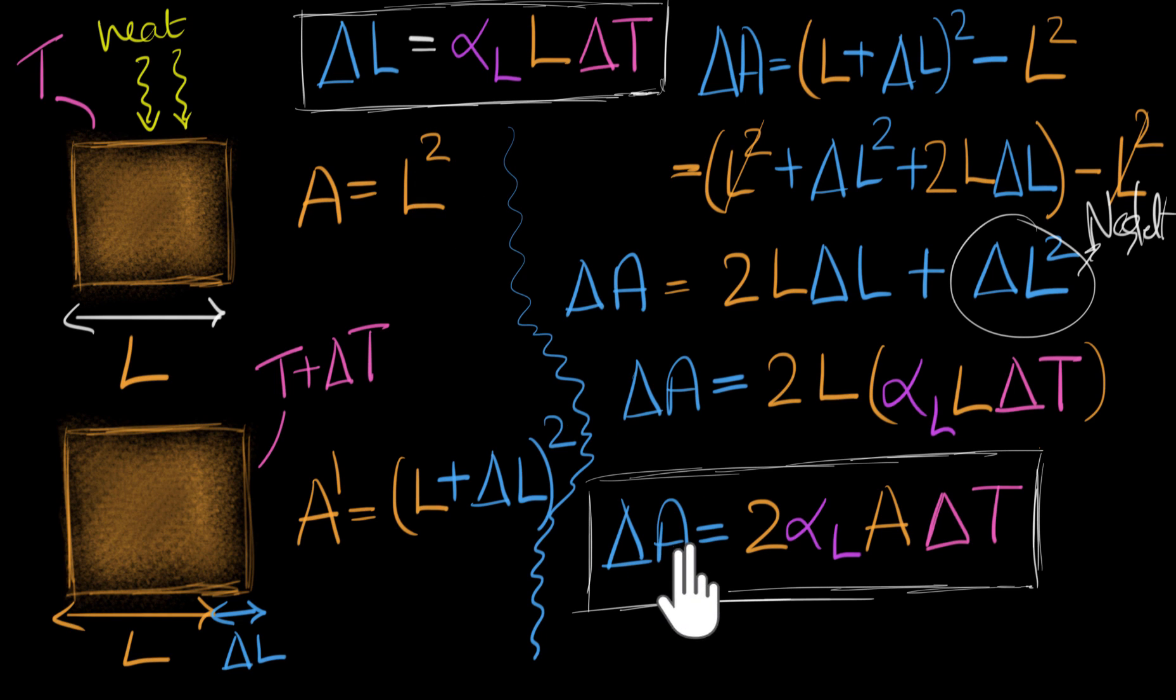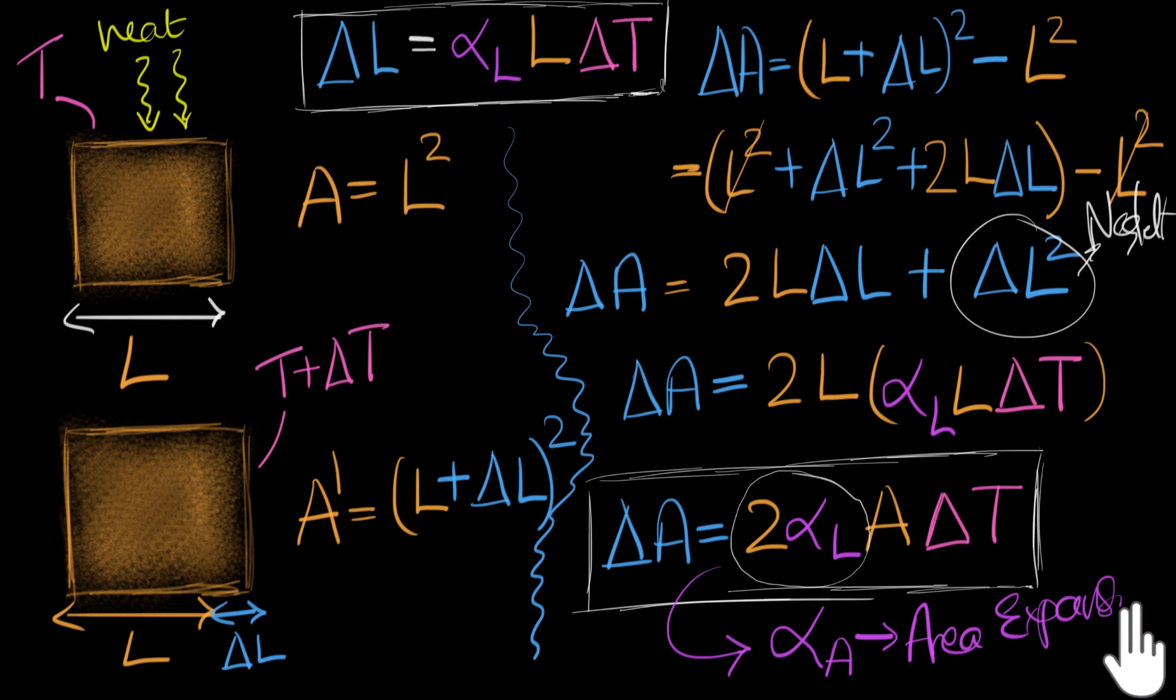They are very analogous to each other. Just like how you have change in length equals some number times length, original length times delta T, you have change in area equals some new number, some new constant, times area times delta T. So just like how alpha L is the linear expansion coefficient, tells you how much length has expanded, this 2 alpha L, we can now call that as the area expansion coefficient. And we often write this as alpha A. And we call this as the area expansion coefficient.